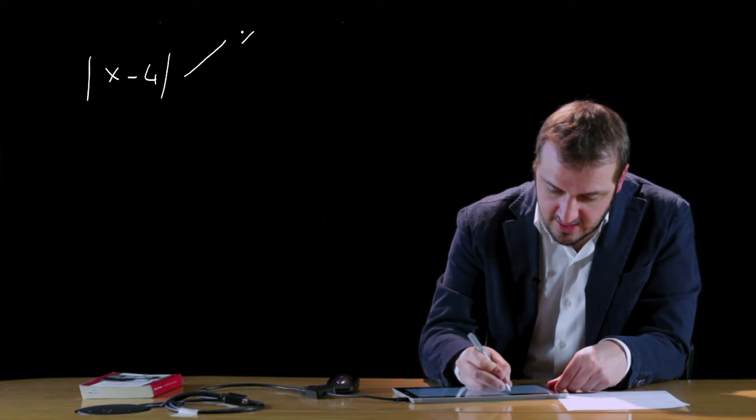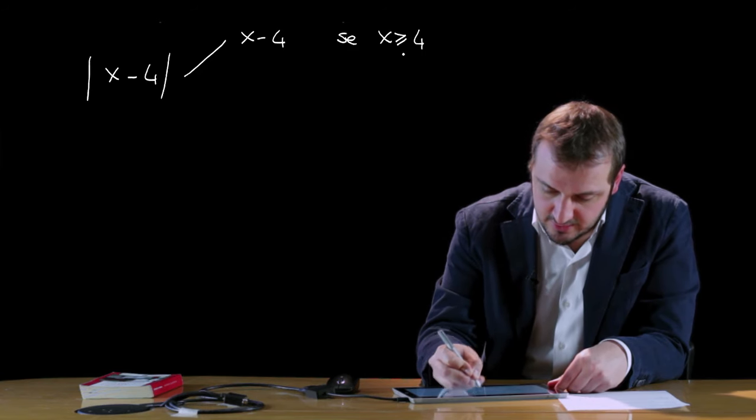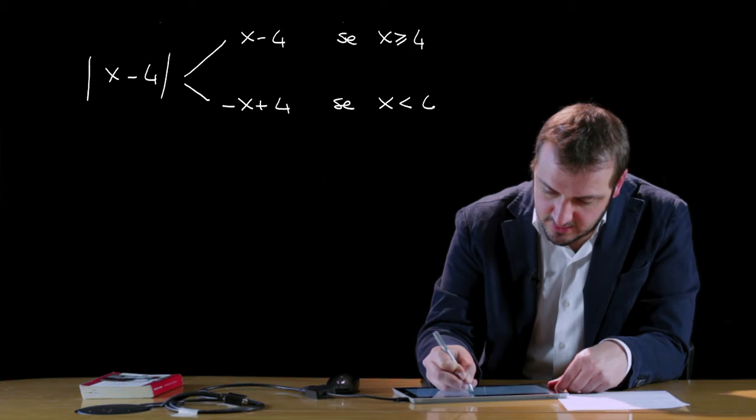Lo stesso discorso vale quando il valore assoluto lo vogliamo ricercare di un'espressione letterale: coinciderà con l'espressione letterale stessa, e sarà invece pari al suo opposto qualora questa espressione letterale sia negativa. Ad esempio, |x-4| sarà pari a x-4 se x-4 è maggiore o uguale di 0, ossia se x è maggiore o uguale di 4; sarà invece pari all'opposto, quindi meno x più 4, per tutti i valori della x minori di 4.